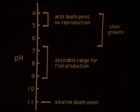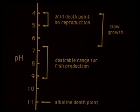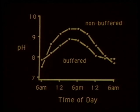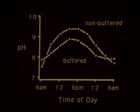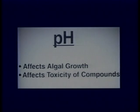Fish are sensitive to extreme values of pH. The acidic and alkaline death points for most fish are approximately pH 4 and 11 respectively. However, slow growth may occur in moderately acidic and alkaline waters. In waters which are not buffered sufficiently, the pH may remain at these values for long periods of time, thereby inhibiting growth. In properly buffered ponds, the pH will remain between approximately 6 and 9 most of the time. This range is desirable for fish production. The pH in a pond directly affects algae growth which influences oxygen concentration and fish health. The pH also affects the toxicity of a number of naturally occurring compounds such as ammonia and hydrogen sulfide, and chemicals which are added to the pond for management purposes such as copper sulfate.